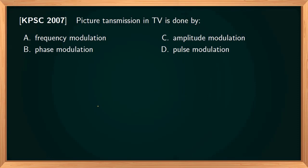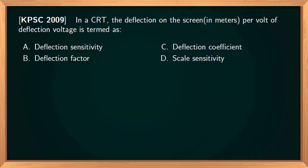Picture transmission in TV is done by amplitude modulation.